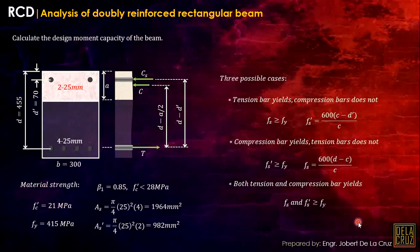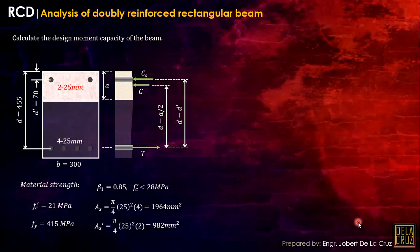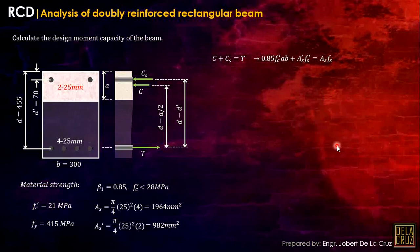Those are the three possible cases in analyzing doubly reinforced concrete. First, calculate C — the distance to the neutral axis — by equating the forces. Substitute: C covers compression of concrete, compression of steel bar, and tension of steel bar. Then we choose a case to assume. I suggest we first assume tension bar yields, compression bar does not yield, because we generally design beams to yield.